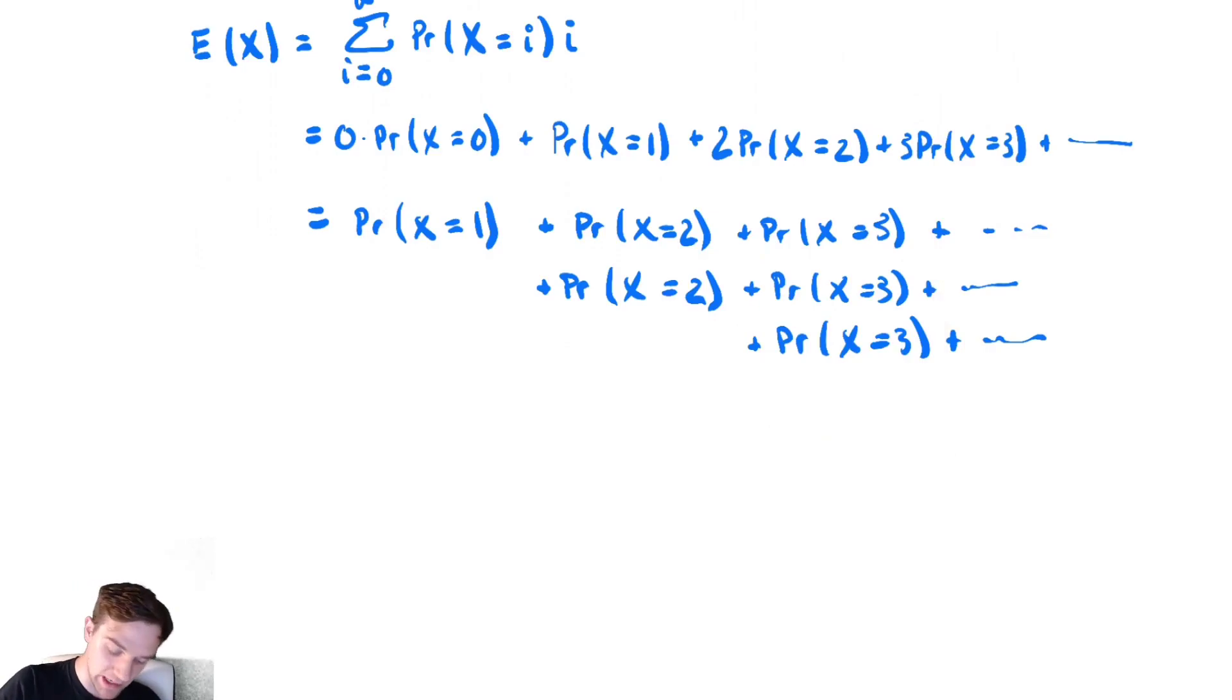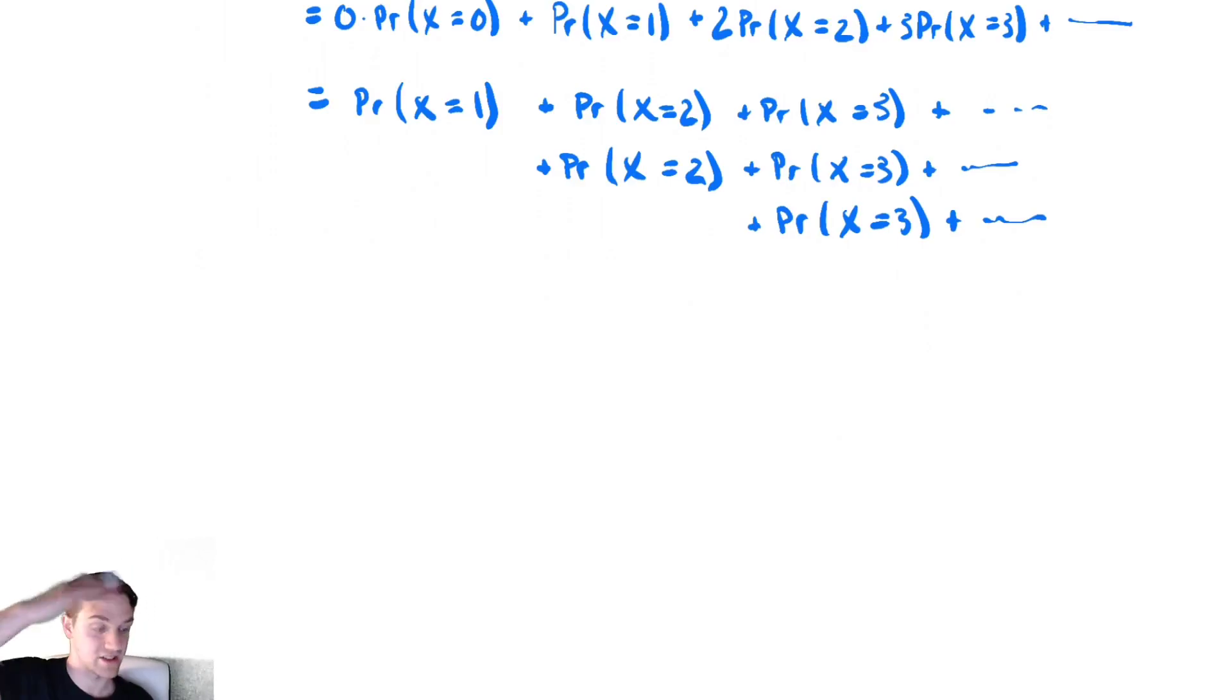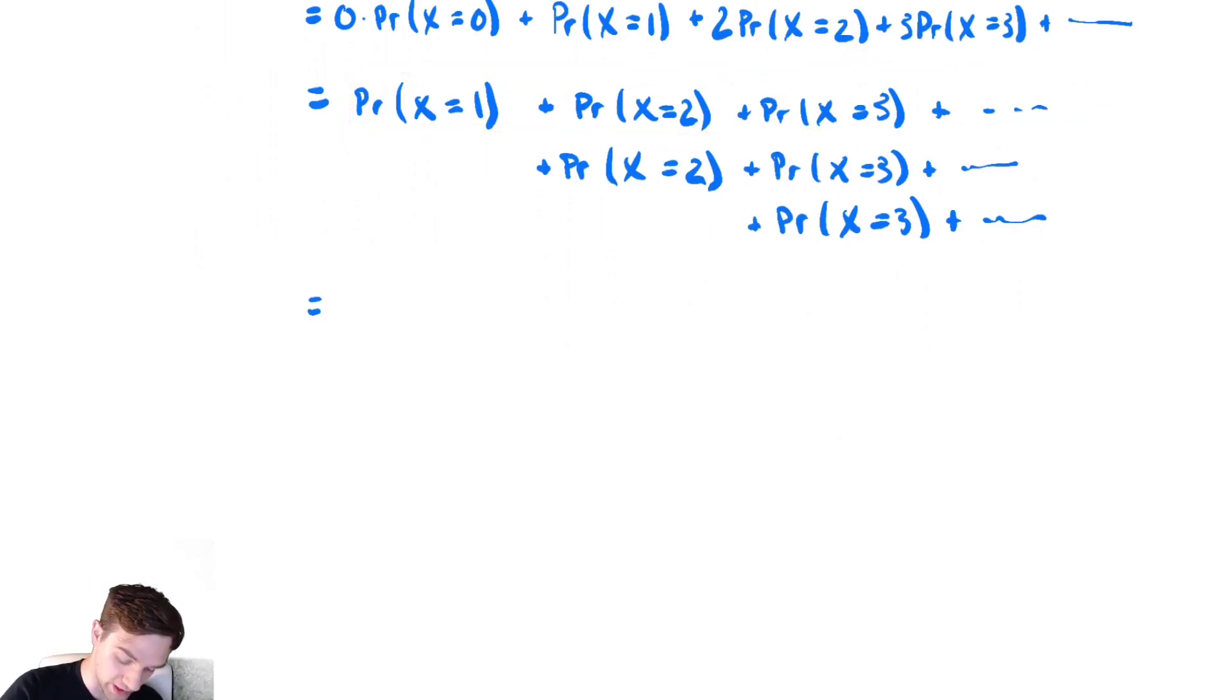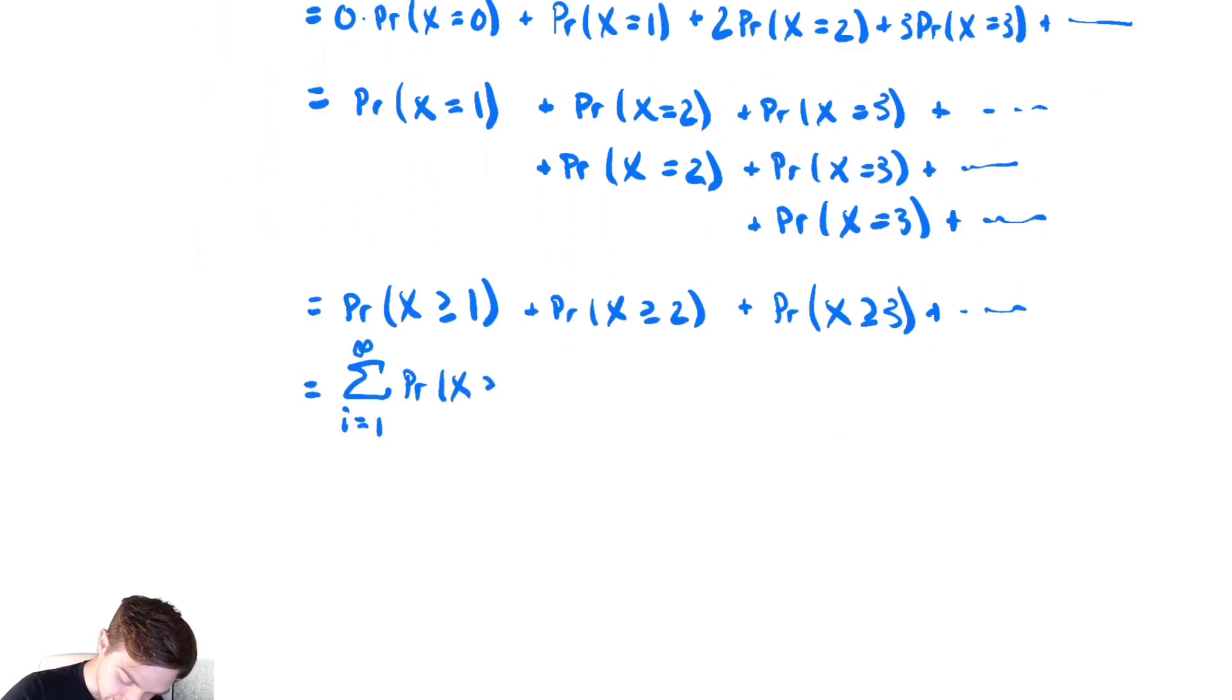And the nice thing about writing it out this way in this sort of weird ladder slash staircase-like structure is that we have this first line is exactly the probability that x is greater than or equal to 1. And that second line is the probability that x is greater than or equal to 2. And the third line is the probability that x is greater than or equal to 3. And so on infinitely. And that's exactly what we had at the start. So this is equal to the sum from i equals 1 to infinity of the probability that x is greater than or equal to i.